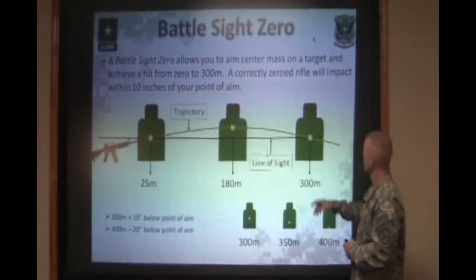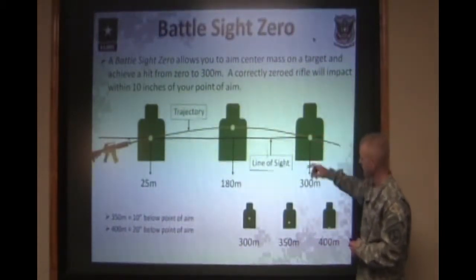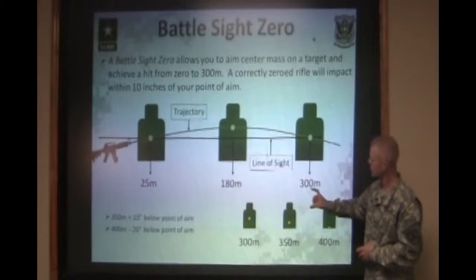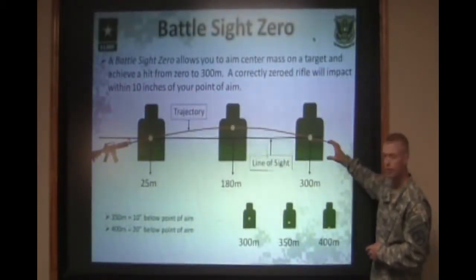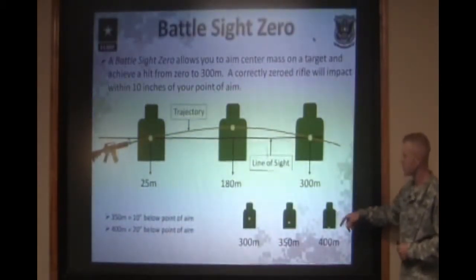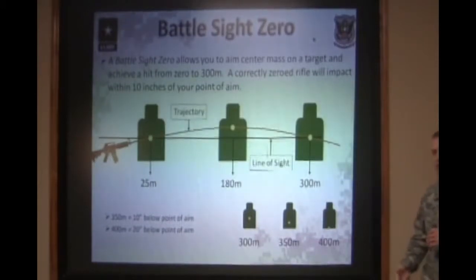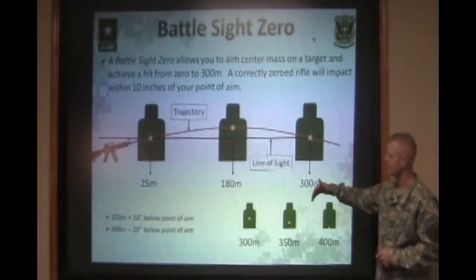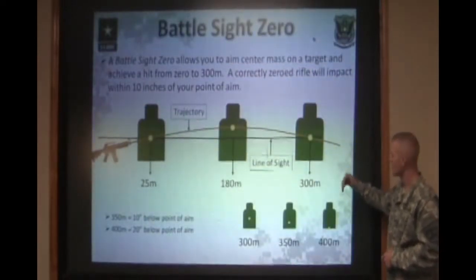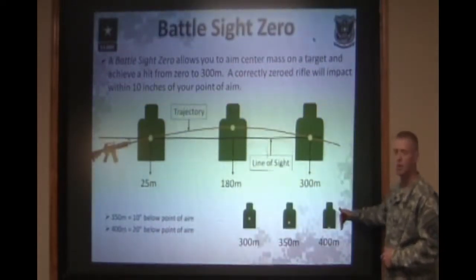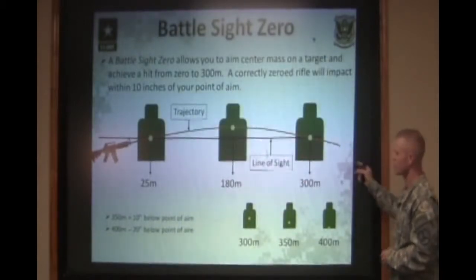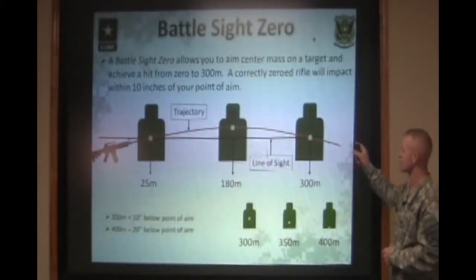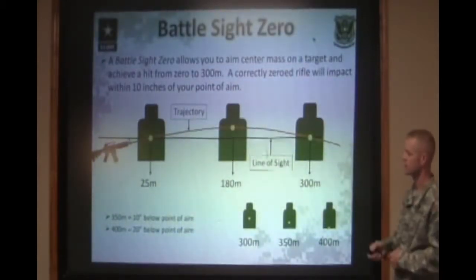At 300 meters, again, point of aim, point of impact. At 350 meters, you're going to be about 8 to 10 inches lower than your point of aim. At 400 meters, you're going to be a full 15 inches or so lower than your point of aim. You can still achieve a hit without manipulating the sights at all, but it's going to be lower out at 400 meters. This is a representation of how that bullet flies through the air and where it will impact targets at each distance.